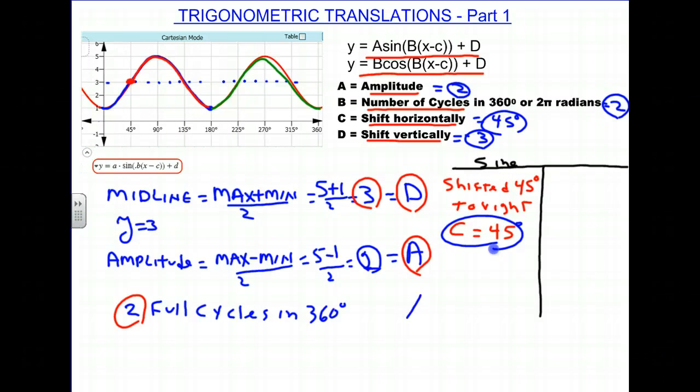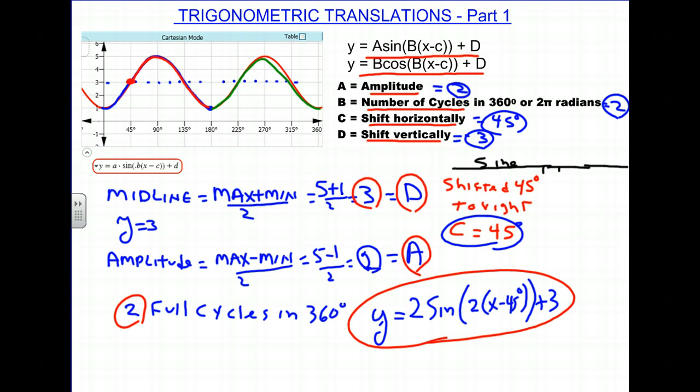And now we have our equation for the sine curve. And the answer will be Y equals A, which we now know is 2, times the sine of B, which we know is also 2 in this case, times X minus 45 degrees, and then plus D, which is our 3. And this turns out to be our equation right here. Y equals 2, the sine of 2 times X minus 45 degrees, plus 3, where this 2 here was our A. This 2 here was our B. This 45 degrees was our C. And this 3 was our D.